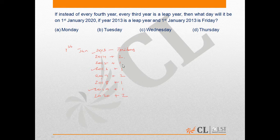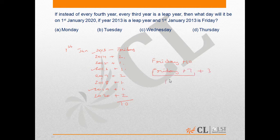So the total number of days to be added: 2, 3, 4, 5, 6, 7, 8, 9, 10 — that is 10 days. Friday plus 10 equals Friday plus 7 plus 3. Friday plus 7 is Friday itself, and Friday plus 3 is Saturday, Sunday, Monday. So the answer is option A — Monday.